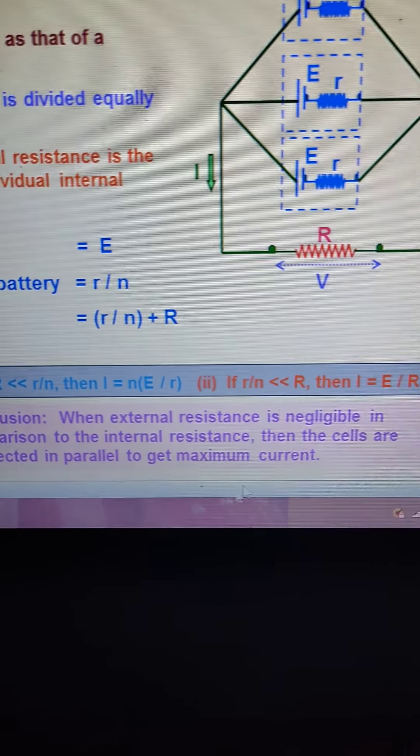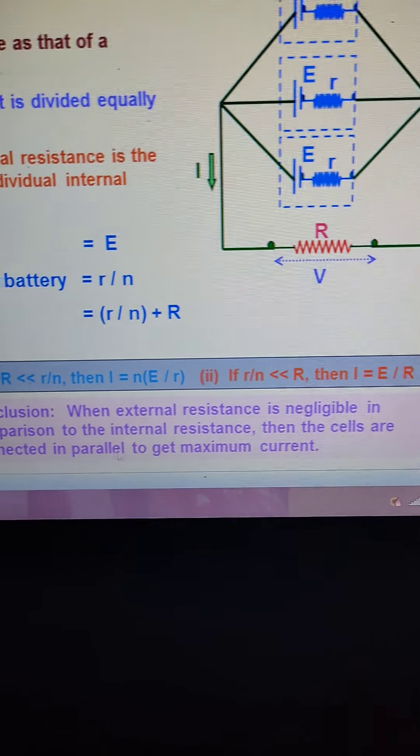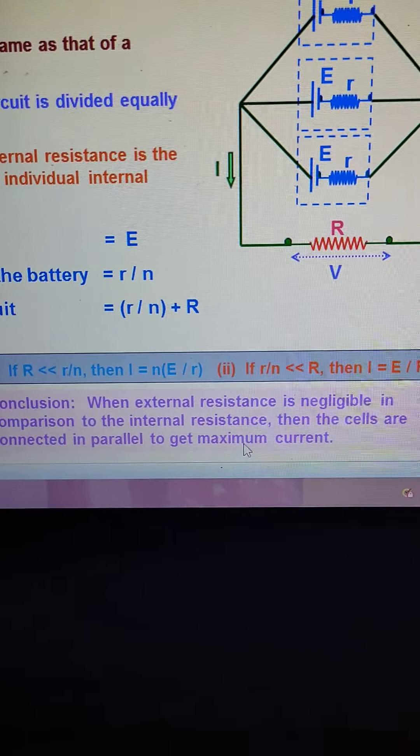Conclusion: When external resistance is negligible in comparison to the internal resistance, then the cells are connected in parallel to get maximum current.